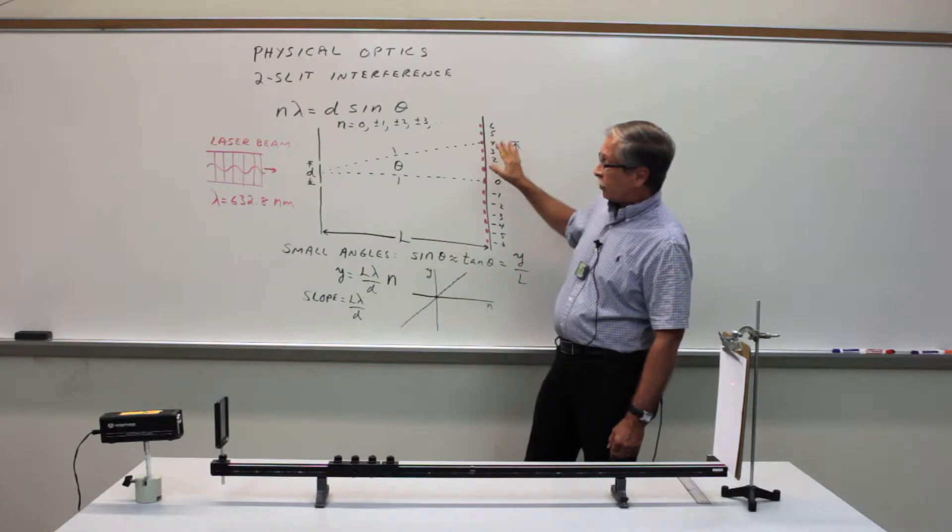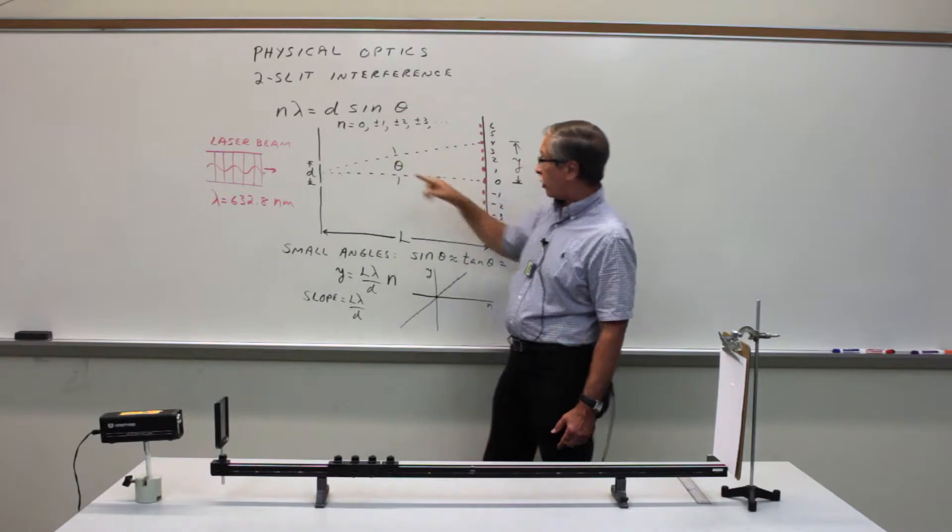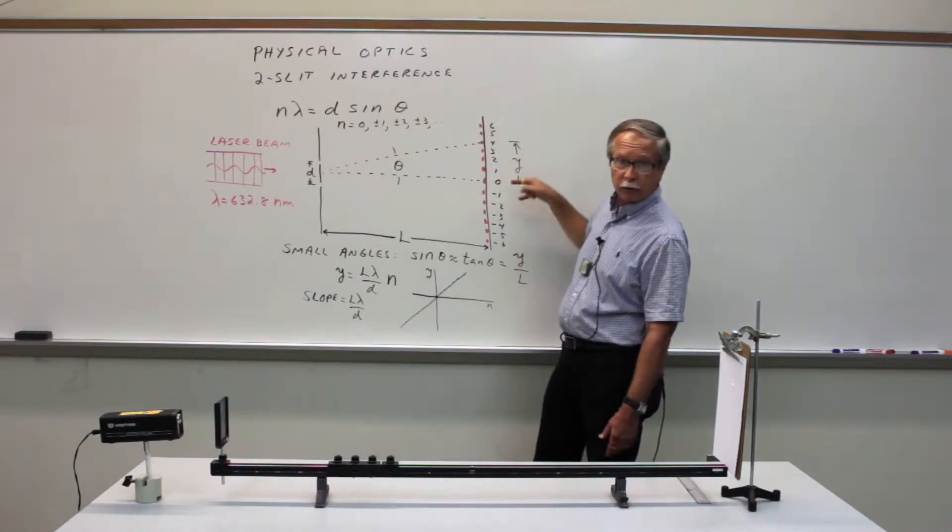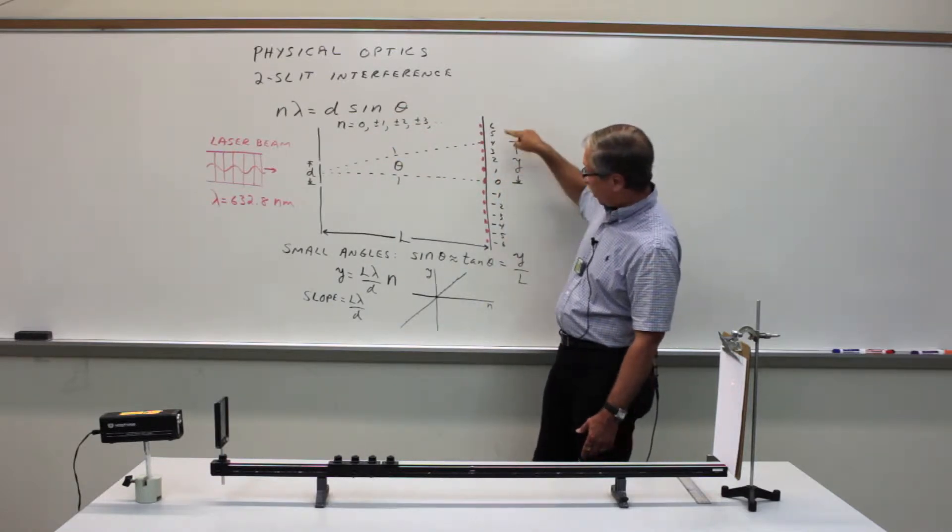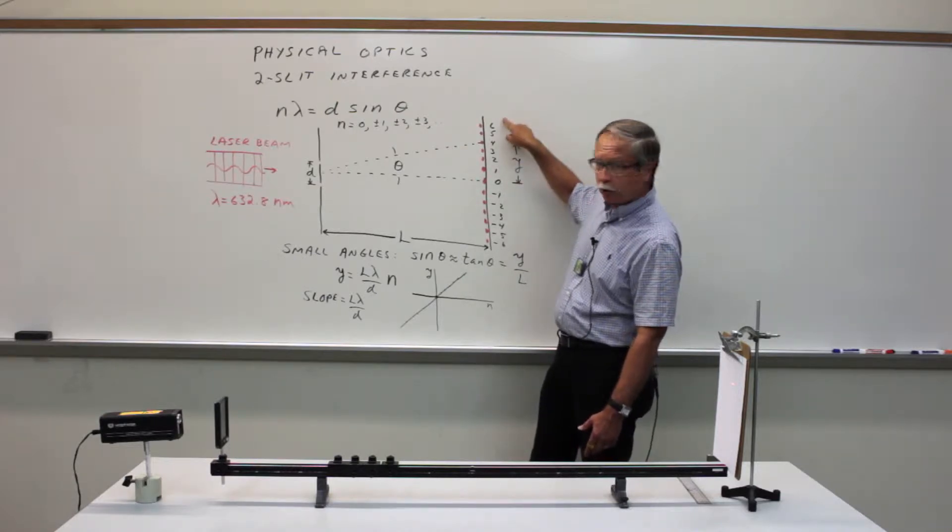So the equation that describes this process is n lambda equals d sine theta, where n is the order of interference or the number of the bright spot counting from zero to positive integers on one side, negative integers on the other side.